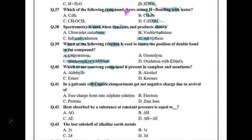Which of the following compounds shows strong hydrogen bonding with water? Alcohols can form strong hydrogen bonds with water. Spectrometry is used when reactants and products absorb UV, visible, or infrared radiation — all of the above radiations are studied in spectrometry.